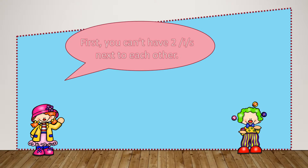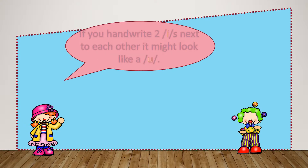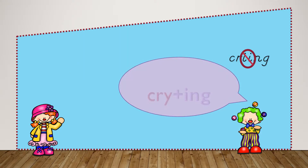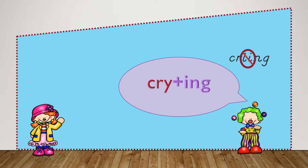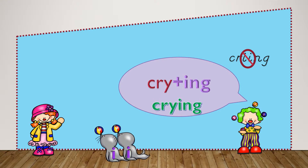First, you can't have two I's next to each other. If you handwrite two I's next to each other it might end up looking like a U. So if you're going to add a suffix to a base word and it's going to give you two I's next to each other, you do not remove the Y. You leave it in place and just add your suffix.